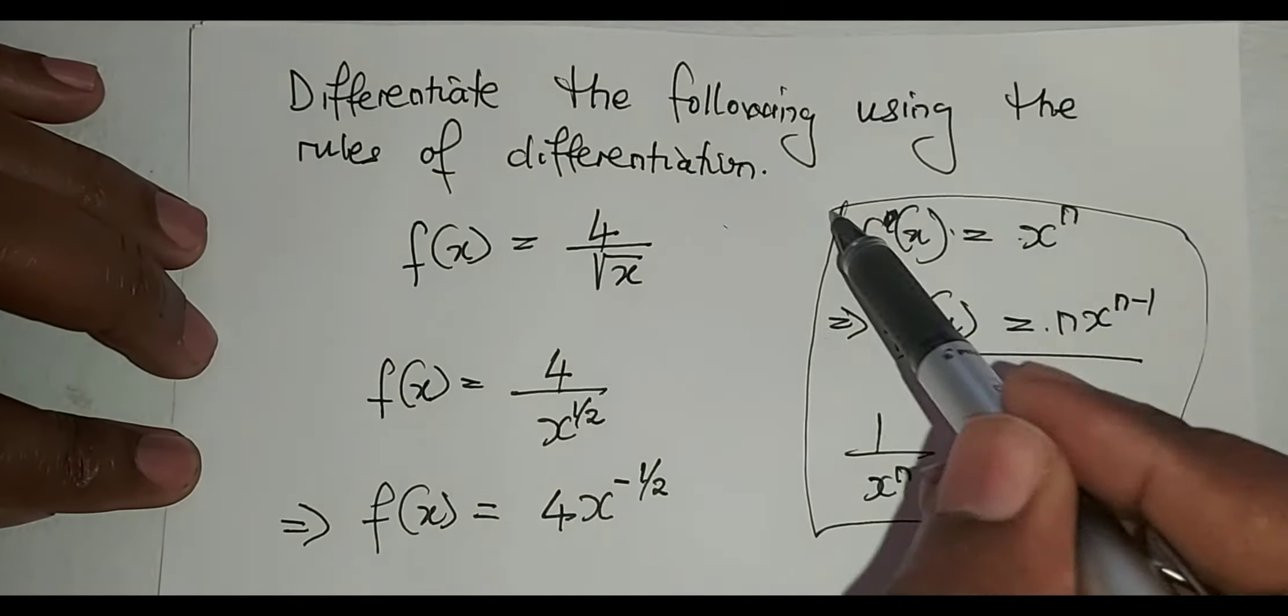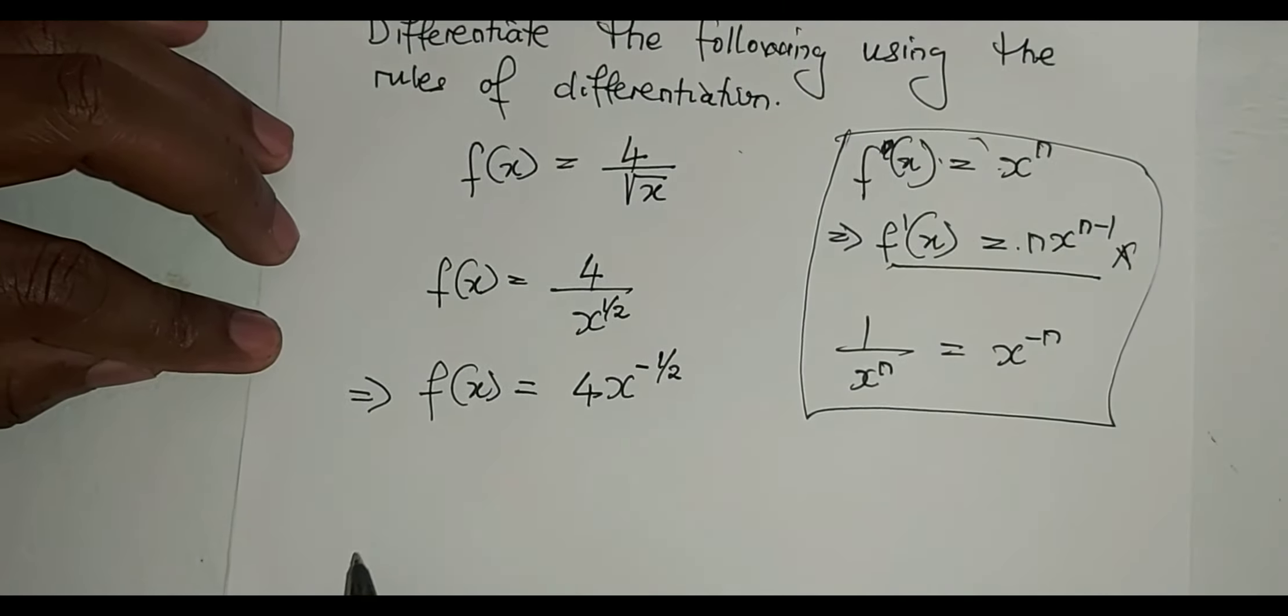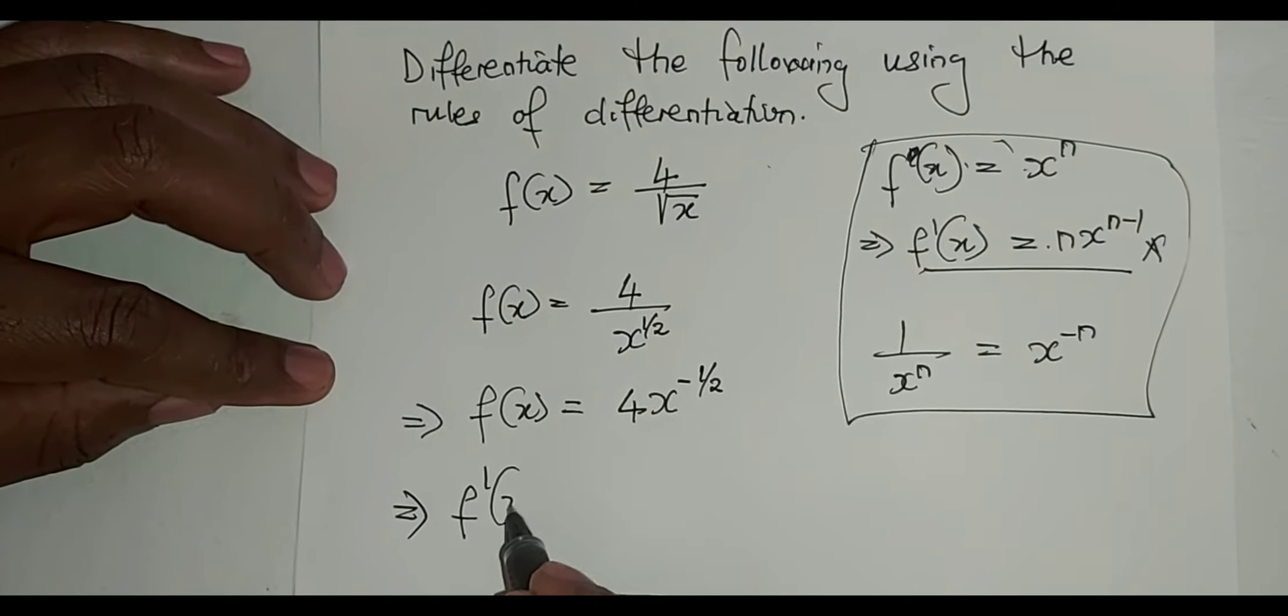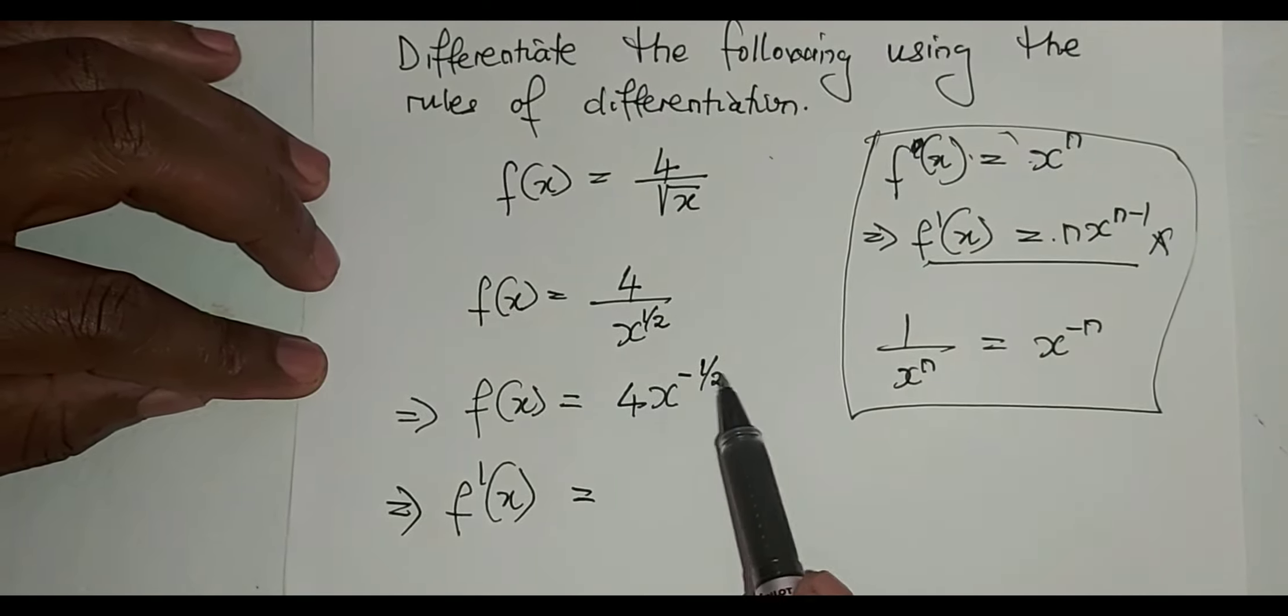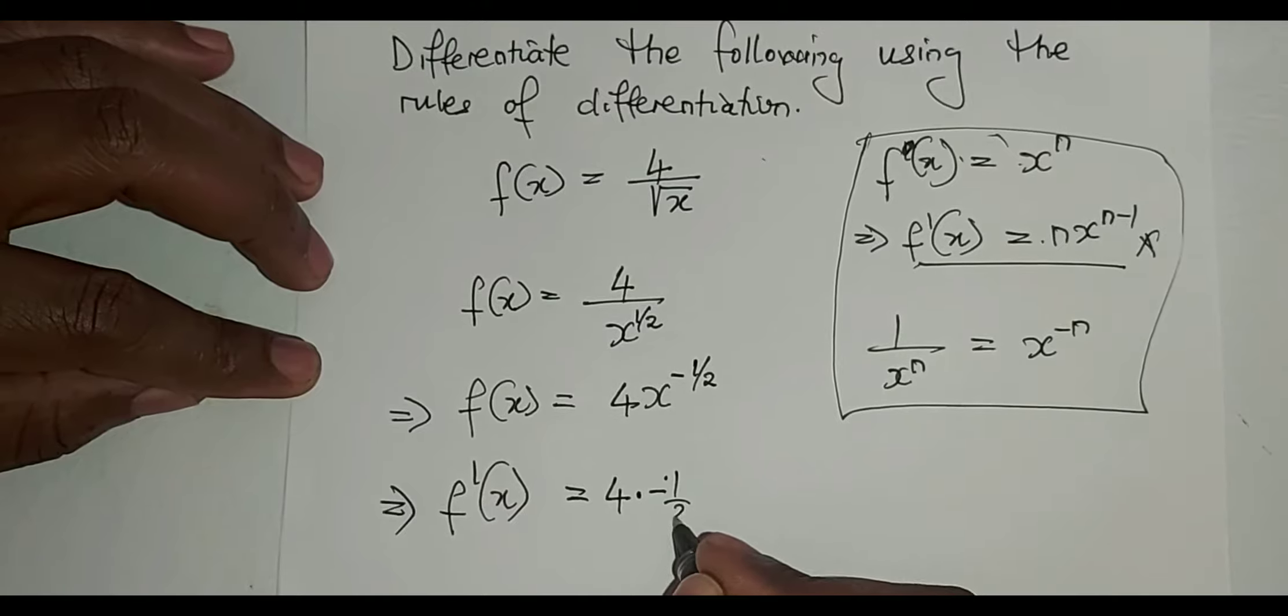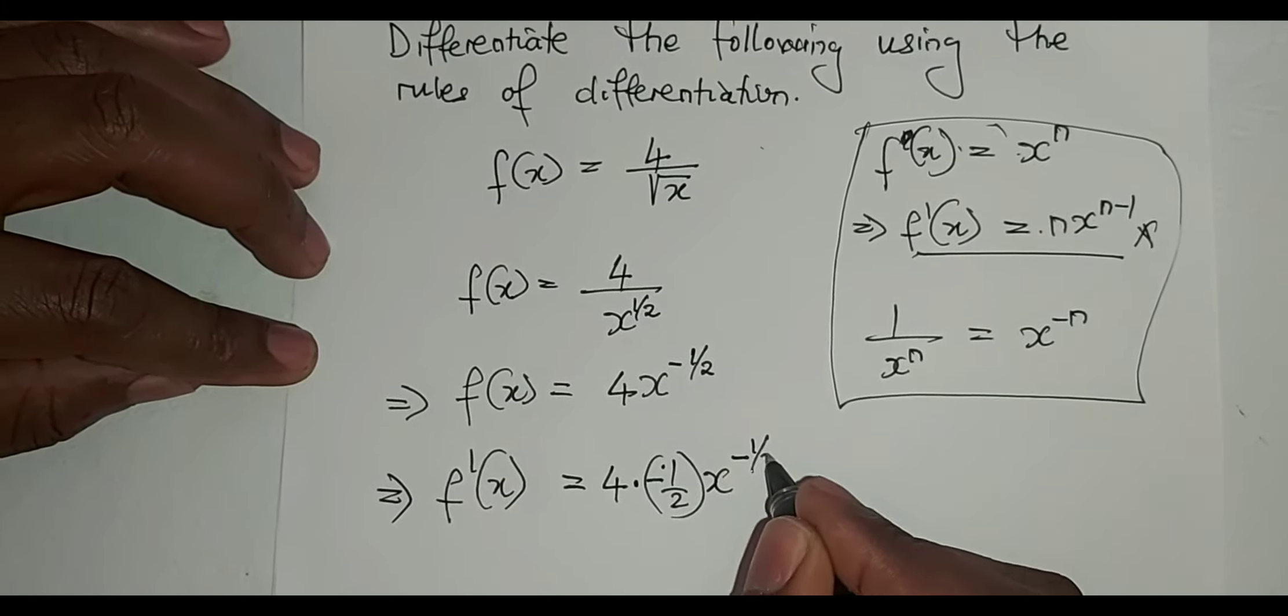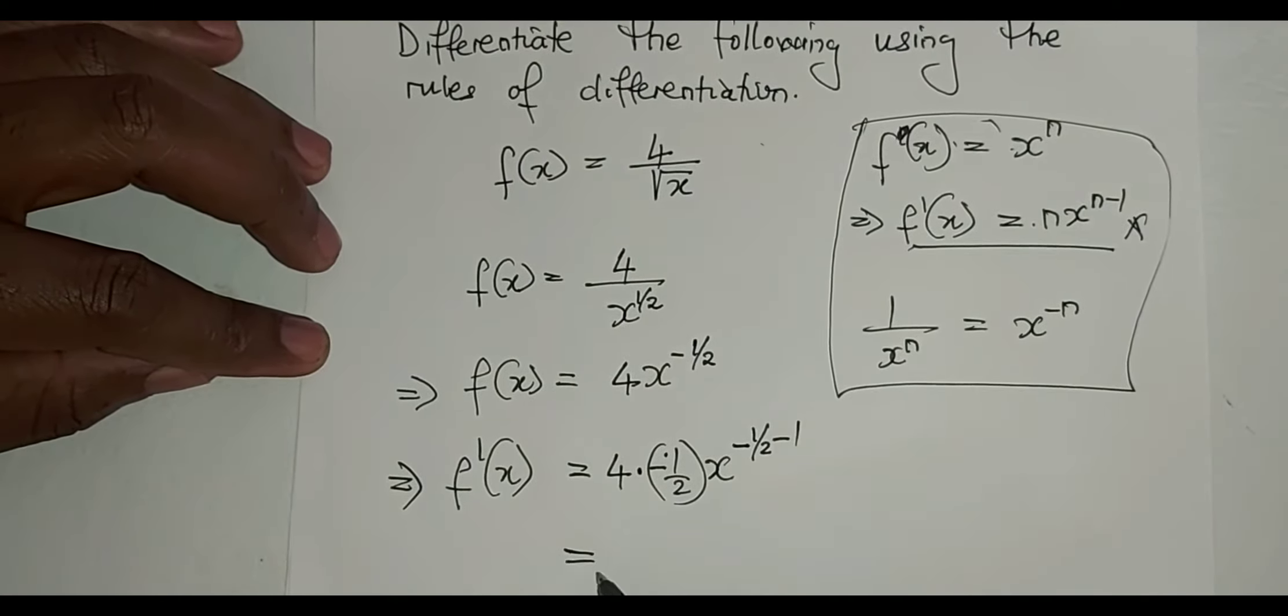So now here we can differentiate using this definition, which now means that f'(x)—now it's f'(x) because we are differentiating—I'll drop the 2 there so it will be 4 multiplied by minus 1 over 2, x to the power minus half minus 1, which is equal to minus half times 4, it gives me minus 2 x to the power minus 3 over 2.